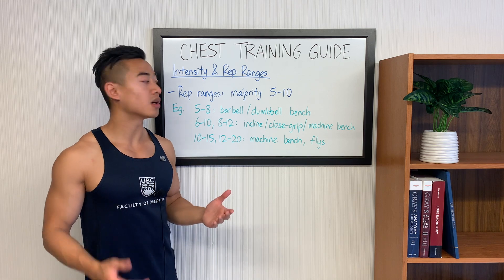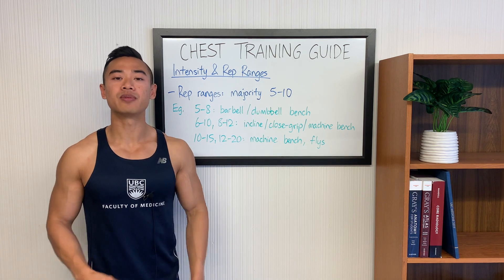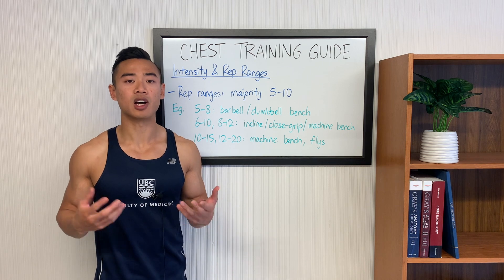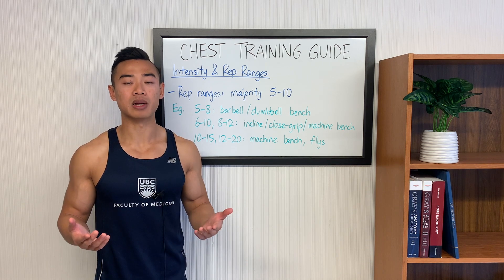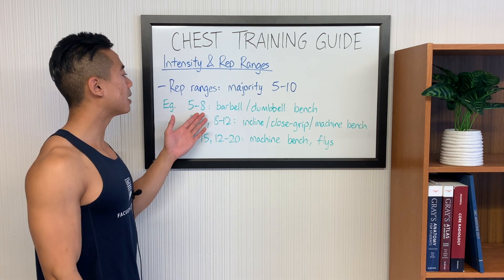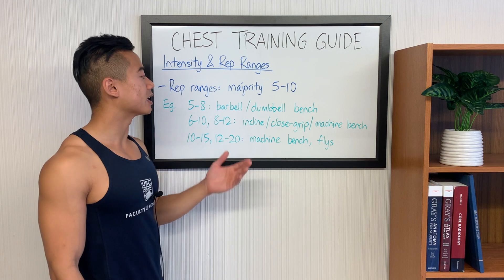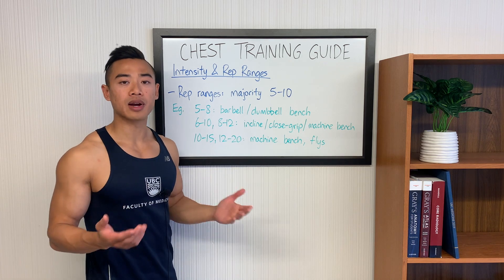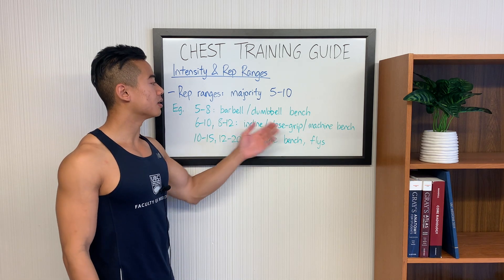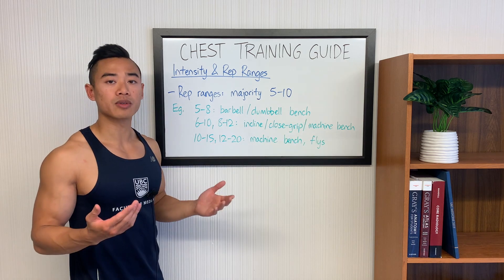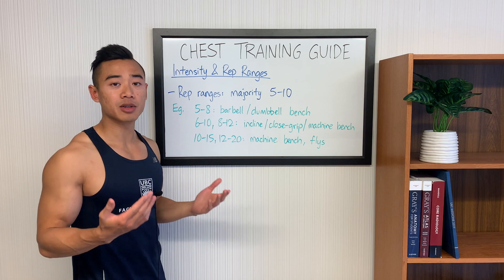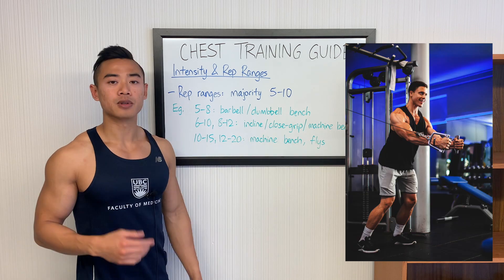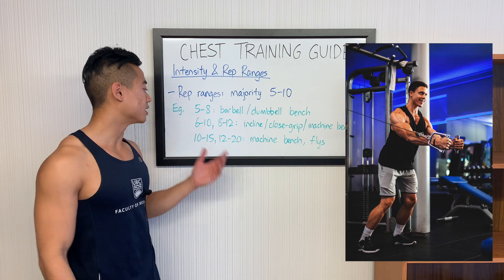I'd recommend focusing on the five to ten rep range. Note that rep ranges are very individual and also depend on the specific exercise. I'll usually use the five to eight rep range for your main heavy pressing movement, like a barbell or dumbbell bench press. Then I like to use the six to ten and eight to twelve rep ranges for most other pressing movements, like an incline bench, close grip, or machine type bench press — most of your chest work is going to lie in these rep ranges. Lastly, you might use the ten to fifteen or twelve to twenty rep ranges for machine bench presses and flies. For chest training, the minority of your work will fall into these higher rep ranges.